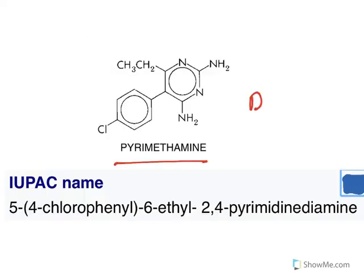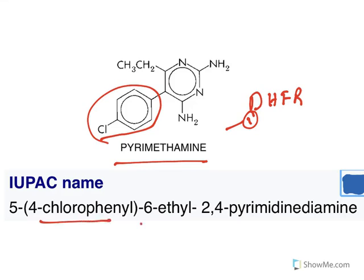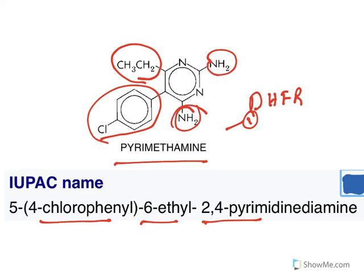Pyrimethamine is also a dihydrofolate reductase inhibitor. Its structure features a 4-chlorophenyl group, an ethyl group at the sixth position, and the ring is pyrimidine. The IUPAC name is 5-(4-chlorophenyl)-6-ethylpyrimidine-2,4-diamine — at the second and fourth positions two amine groups are present, at the fifth position a 4-chlorophenyl group, and at the sixth position an ethyl group.